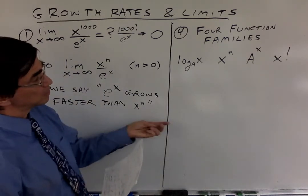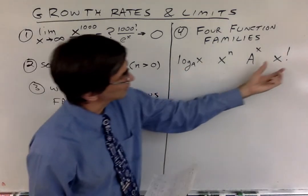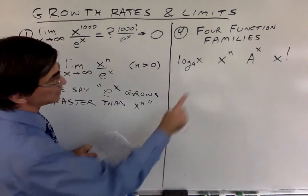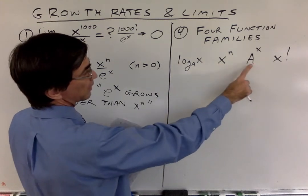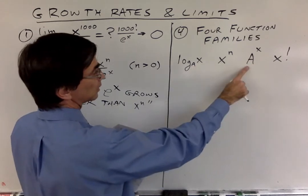So for our class, you should know four function families. Log x, x to the n, a to the x, and x factorial. That's what their names are. This is called a power function, and a to the x is called a general exponential function. A means it could be any base.